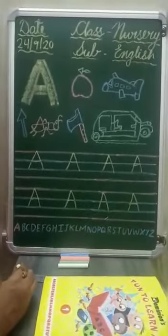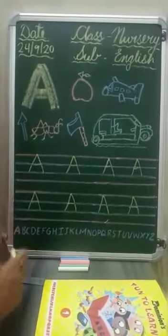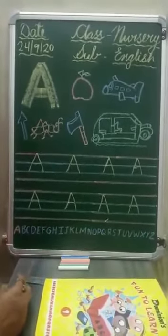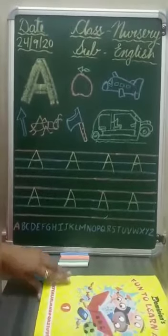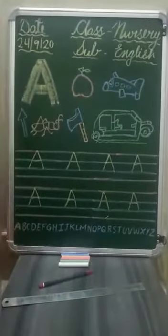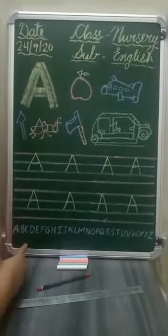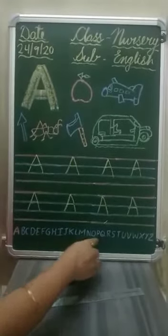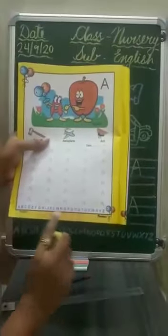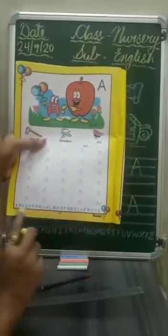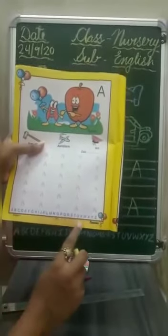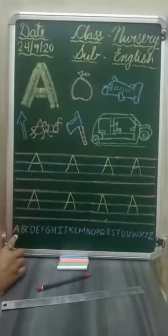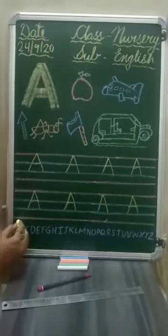Now kids, this is the formation. You have to write A. So open your book. Now we will do a concept activity — find the letter A. You kids have to find the letter A. Where is it? Look at here — yes, it is here. Make a circle around it.